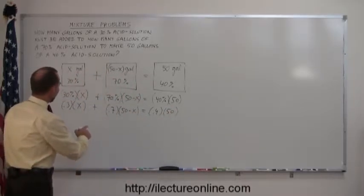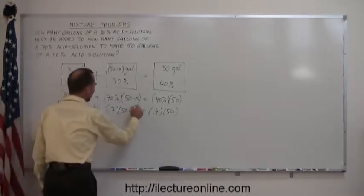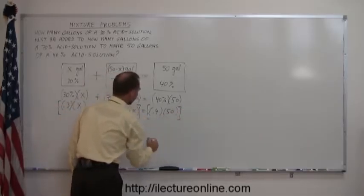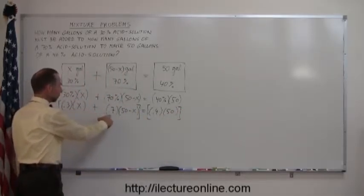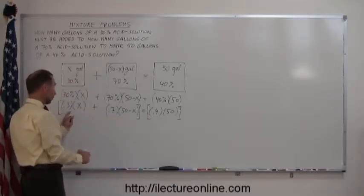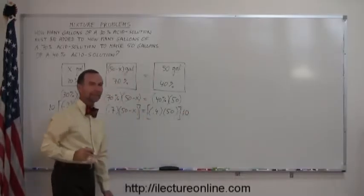Okay, now we have an equation that has decimals in it, and we don't like decimals, so we're going to multiply both sides of the equation by a number to eliminate those decimals. And it looks like all I need to do is multiply both sides by 10, because then the 0.3, the 0.7, and 0.4 turn into a 3, a 7, and a 4.